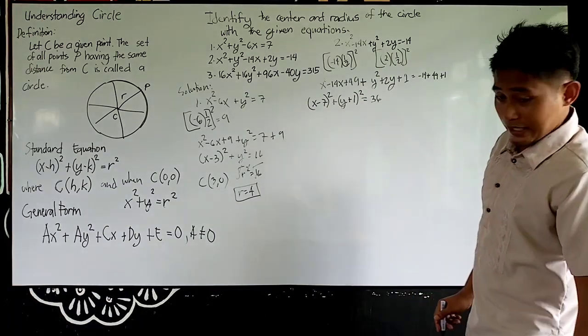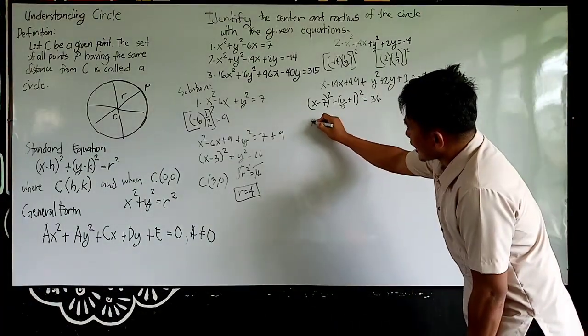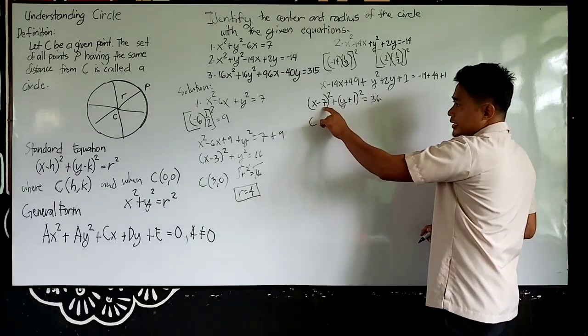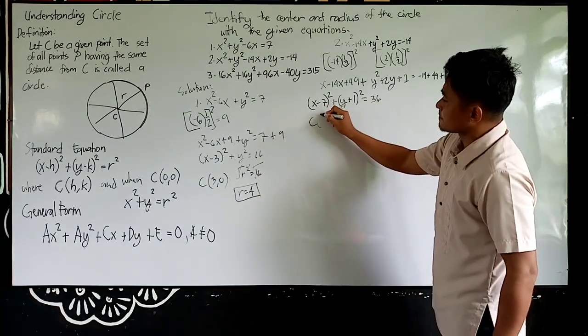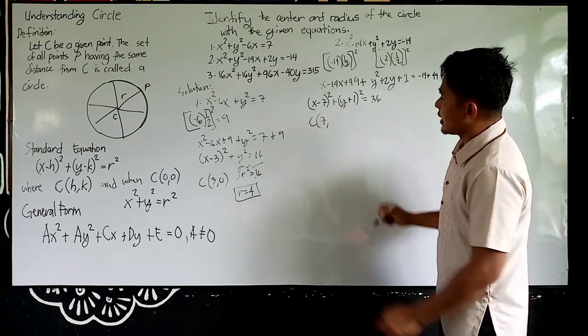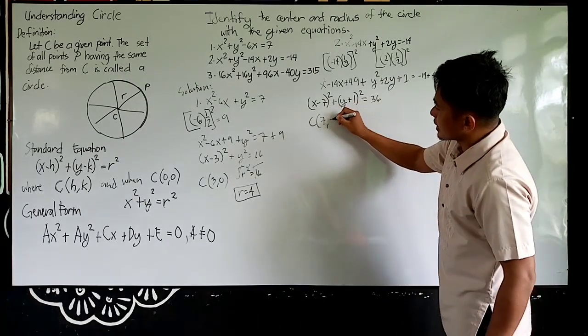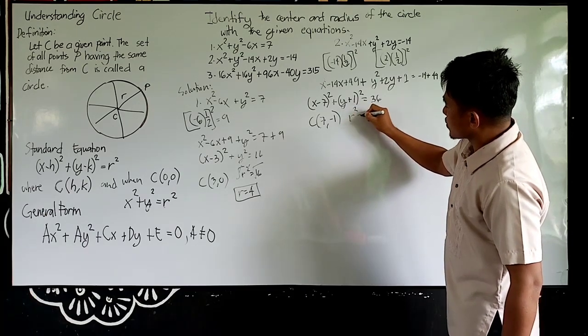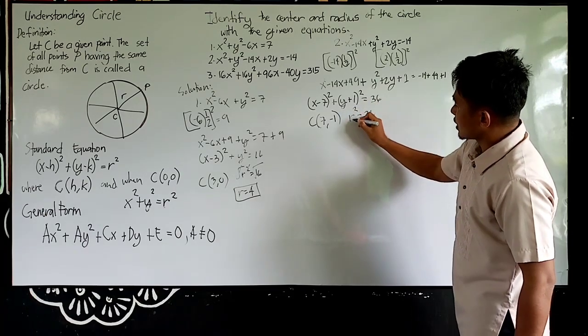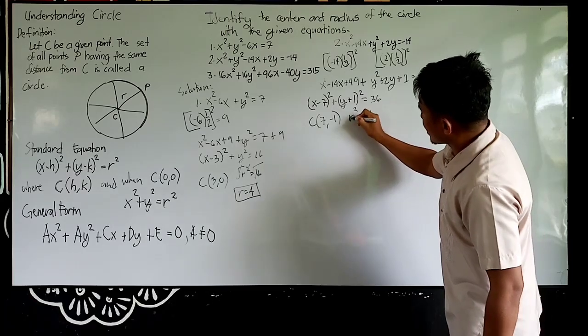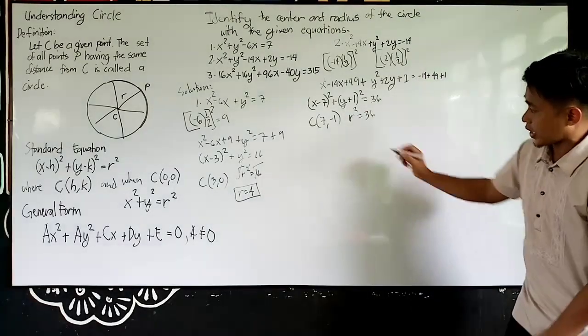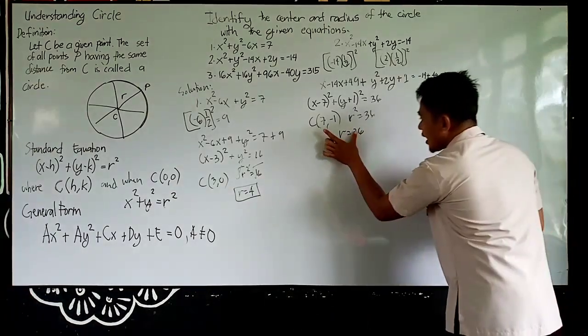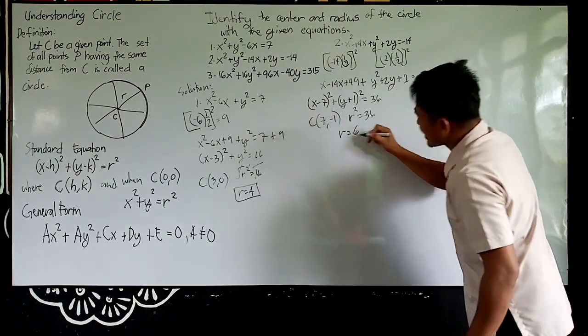So you can find out the center. Again, the center, itong sign ko, magiging from negative, magiging positive, then from positive, magiging negative. So 7 and negative 1. Then your r, equate this 36 to r². Obviously, get the square root of both sides, r is equal to 6.